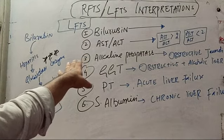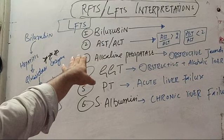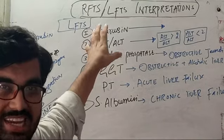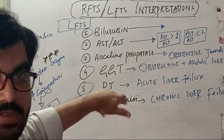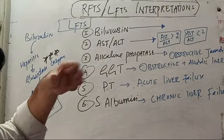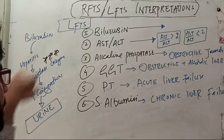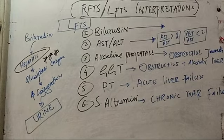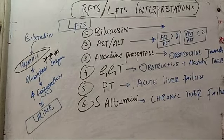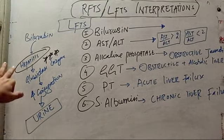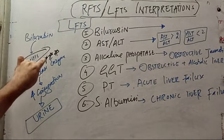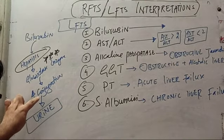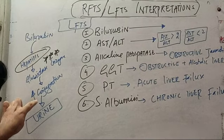The main difference is: if you have unconjugated hyperbilirubinemia, the cause is pre-hepatic — hemolytic anemias and ineffective erythropoiesis. If conjugated hyperbilirubinemia, the cause is either in the liver or post-hepatic, such as obstruction in the common bile duct. In hepatitis, the glucuronidation enzyme becomes super active, increasing the conjugation process, so there is conjugated hyperbilirubinemia.